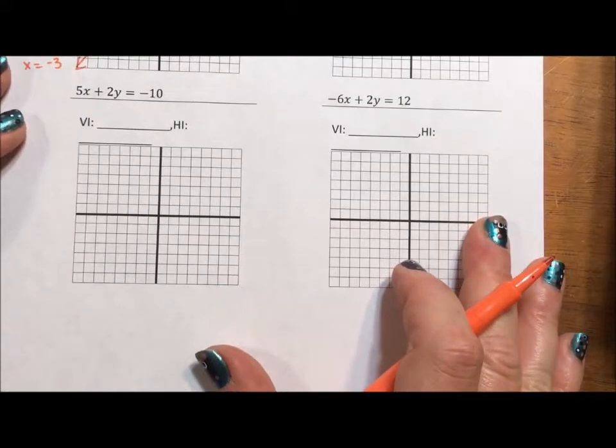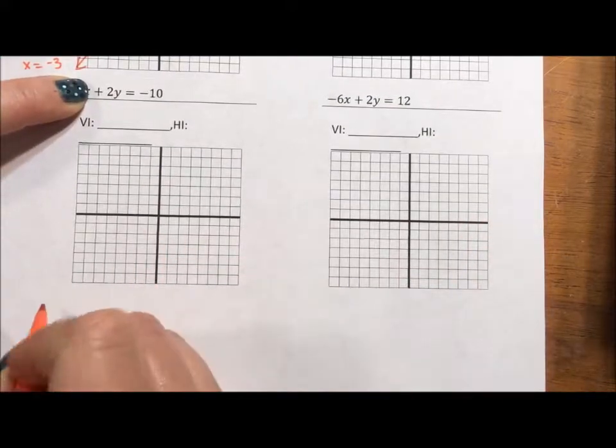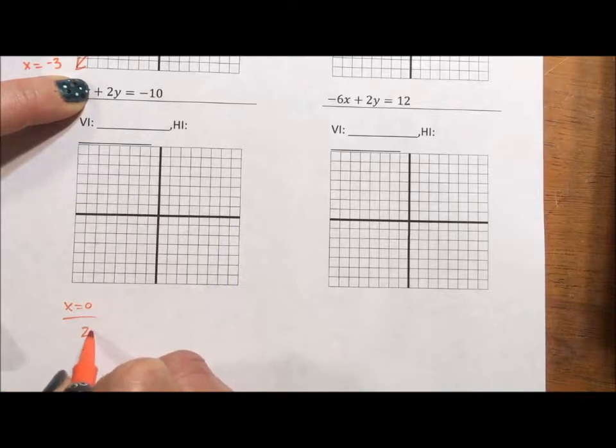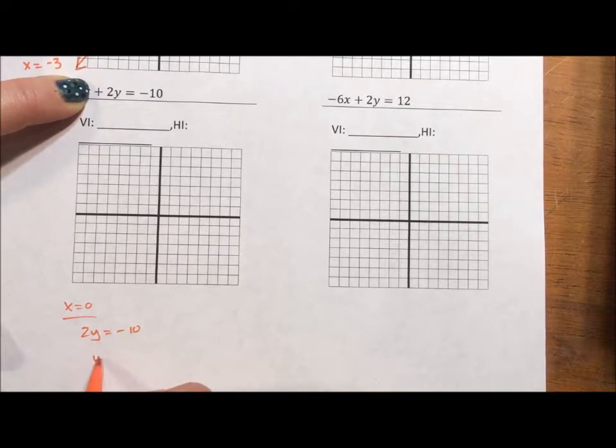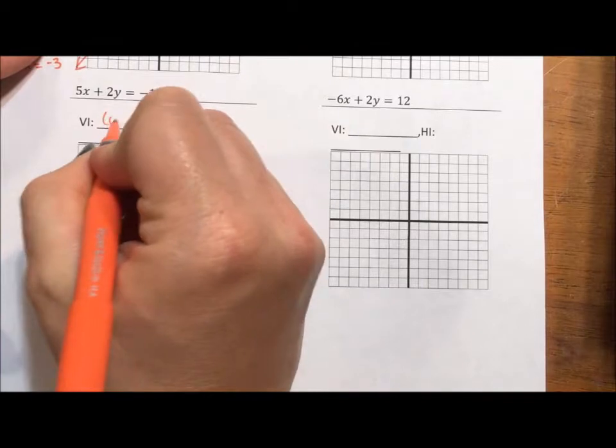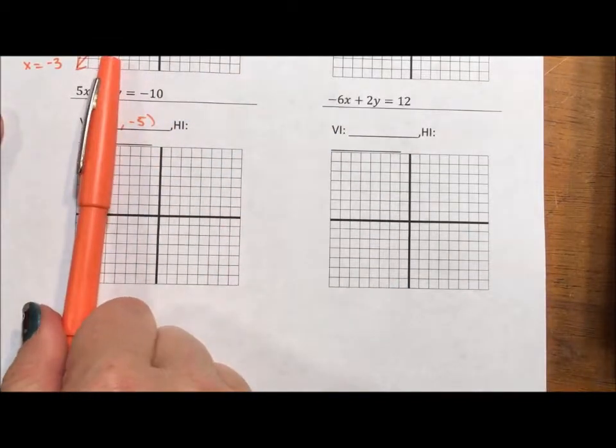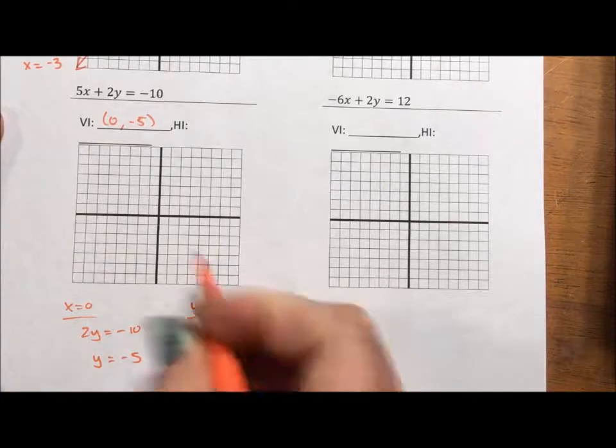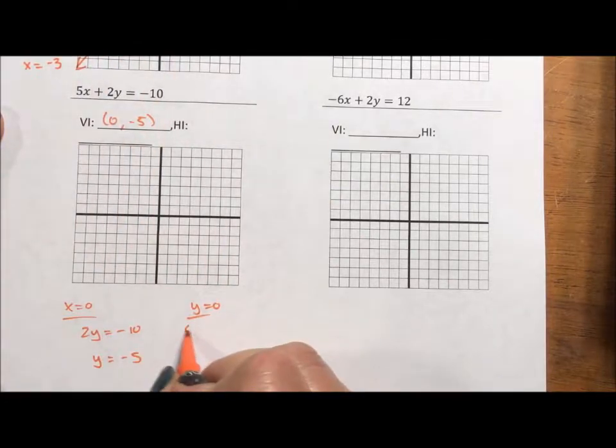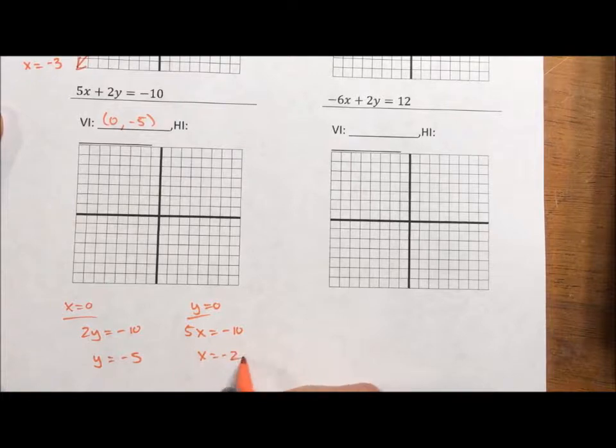So again, I could just do the cover-up and cover this up and say, hey, when x is 0, 2y equals negative 10 or y equals negative 5. 0, negative 5. Or I can cover up y and say, hey, if y is equal to 0, then 5x equals negative 10 or x is equal to negative 2.